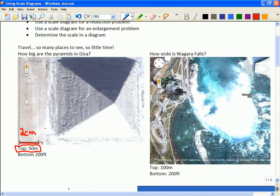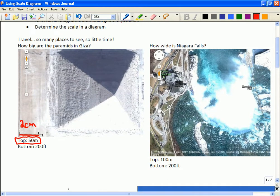Am I ready to make a scale factor out of two centimeters and 50 meters? What's wrong with two centimeters and 50 meters? They're not the same units. So, the first thing we have to do is change them to the same units.